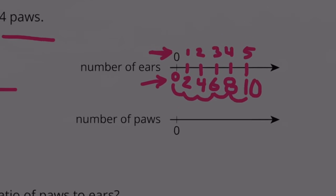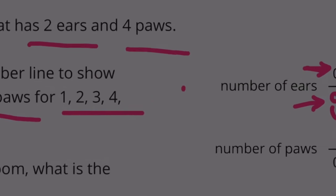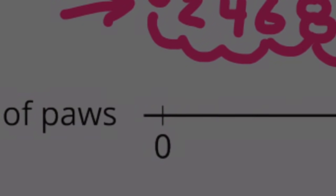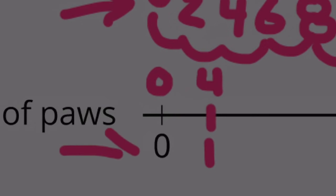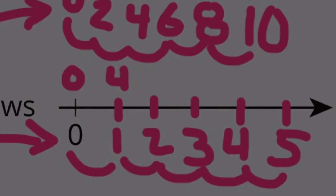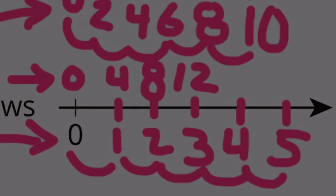The number of paws: each cat has 4 paws, so 0 cats is 0 paws, 1 cat is 4 paws. We increase by 1 cat at a time, and the paws increase by 4: so 0, 4, 8, 12 for 3 cats, 16 for 4 cats, and 16 plus 4 is 20 paws for 5 cats.